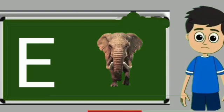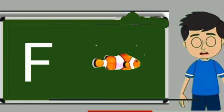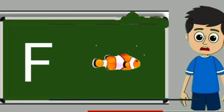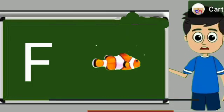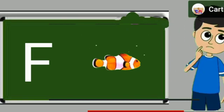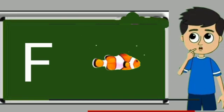E for elephant. Elephant means hathi. F for fish. Fish means machli.